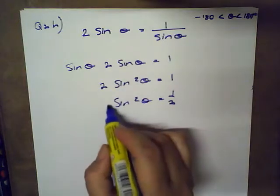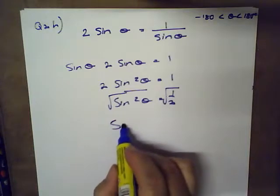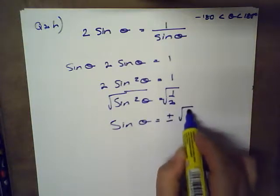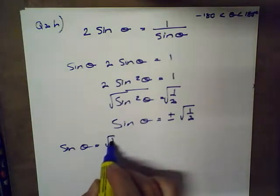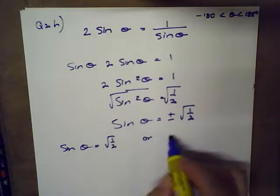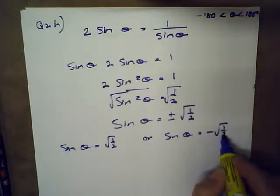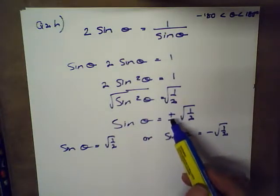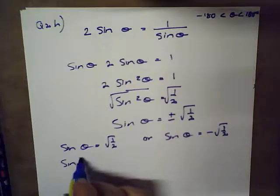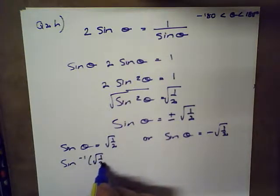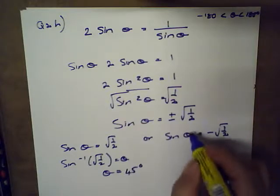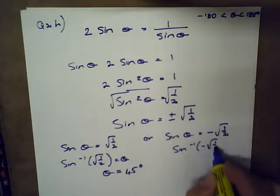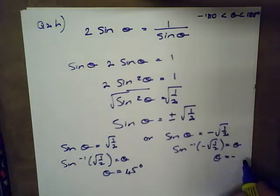Now I can take the square root on both sides to find sine theta, so sine theta equals plus or minus the square root of one half. We split the equation into two parts: sine theta equals positive square root of one half, or sine theta equals negative square root of one half. Taking the inverse of the positive case gives theta equals 45 degrees, and taking the inverse of the negative case gives theta equals negative 45 degrees.